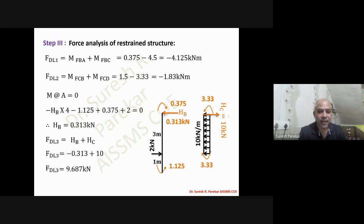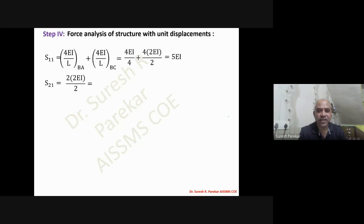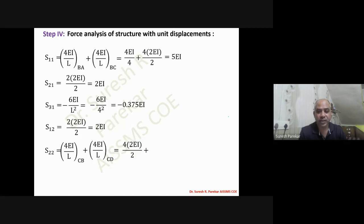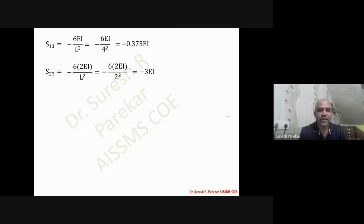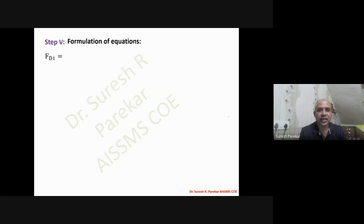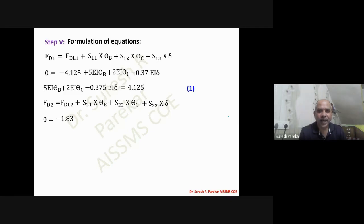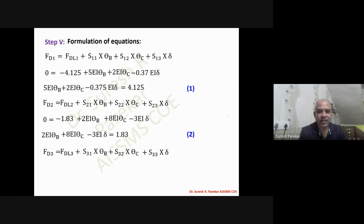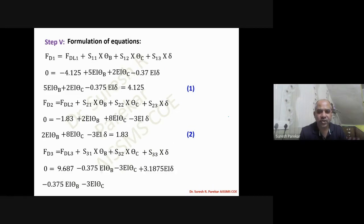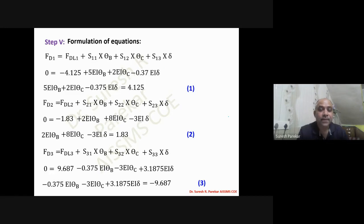Substituting all stiffness values — unit displacement at 1, at 2, and at 3 — into the equilibrium equations and substituting FDL values, we get three simultaneous equations. Solving these gives EI·θB, EI·θC, and EI·Δ.